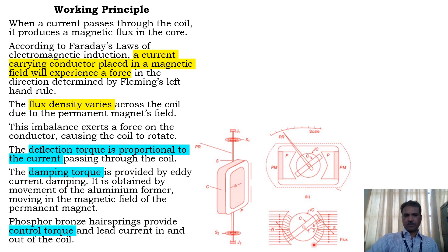There are phosphor bronze hairsprings provided for controlling torque. Why do we need control torque? Once the deflecting torque is set up, the controlling torque acts in the opposite direction on the pointer so that it will point to the correct reading.